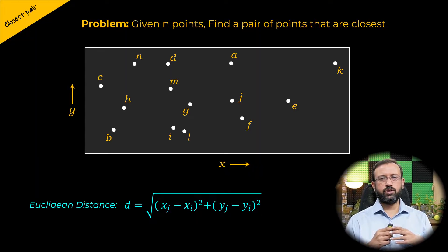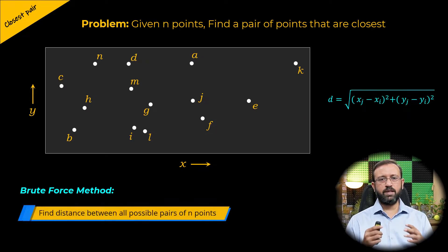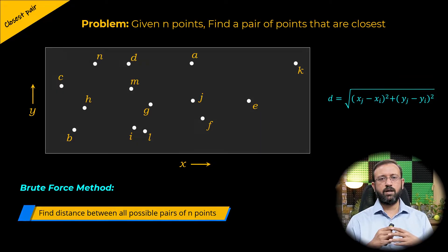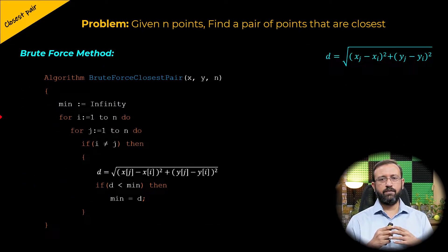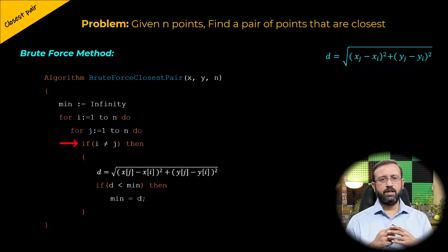One solution to the closest pair problem is to use the brute force method. The brute force method finds the distance between all possible pairs of n points and chooses the smallest distance. To do this, we use a for loop i from 1 to n and a nested for loop j also from 1 to n. We then check if i is not equal to j, because if i equals j, those are the same point, and we are computing distances between different points.